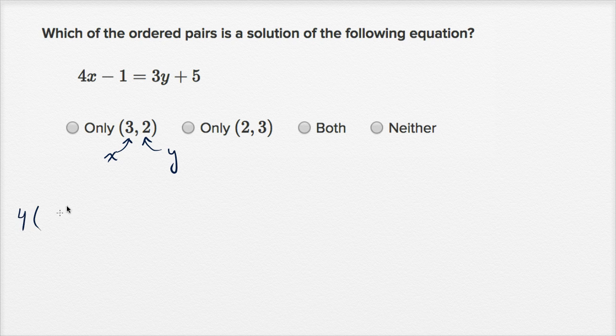So we have 4 times x. Well, we're saying x needs to be equal to 3 minus 1 is going to be equal to 3 times y. Well, if this ordered pair is a solution, then y is going to be equal to 2. So 3 times y, y is 2, plus 5.